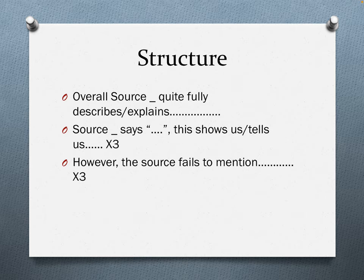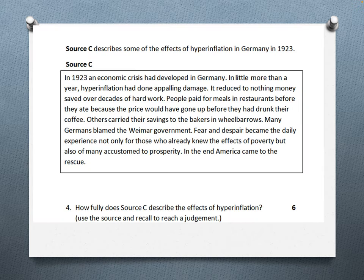Again, we have a structure to follow. We do an overall judgment: 'Overall, source A, B, or C quite fully describes or explains whatever the question is asking.' Then source A says — give a quote — this shows or tells us. We do that three times. However, the source fails to mention — and then three things the source doesn't tell us; that's where our own knowledge comes in. Here's an example: source C describes some of the effects of hyperinflation in Germany in 1923, and we're asked how fully source C describes the effects of hyperinflation. It's a describe question, so you don't need to give too much explanation for each quote.